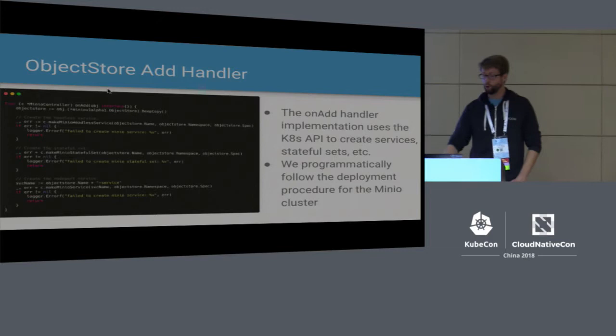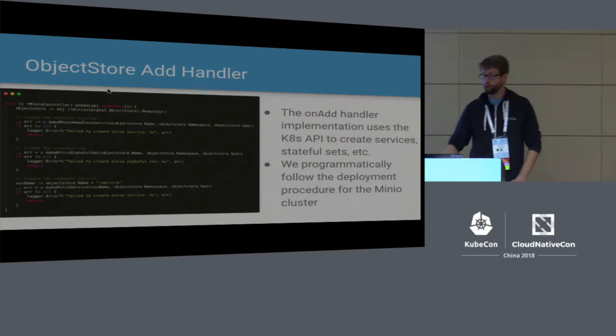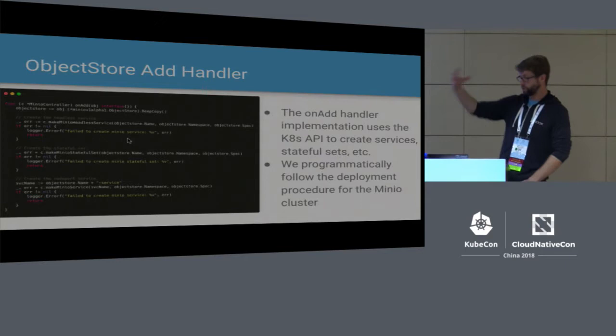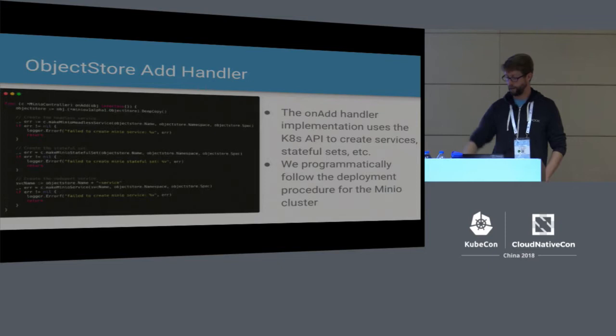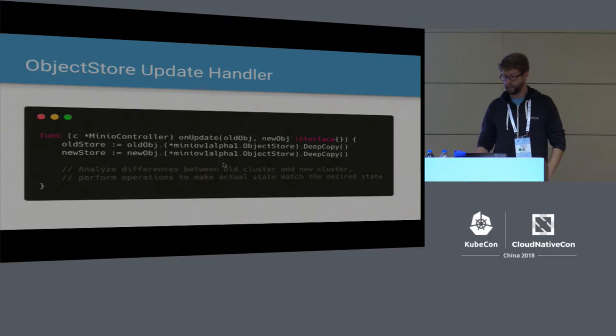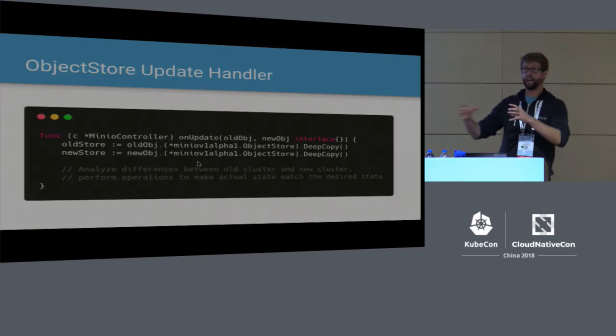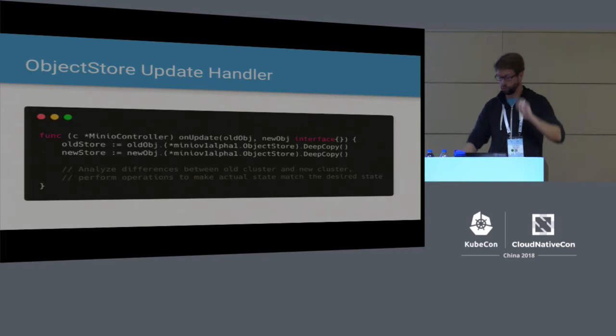The on-add handler is where the real work happens. When a Minio object store gets included into the cluster, it runs functions to make the service for it, make the stateful sets, and create a service on top. This is all programmatic Go code talking to the Kubernetes API cluster to make a Minio object store happen. Similarly for update — you look at the old spec and the new one, analyze the difference, and take corrective actions using the Kubernetes API to make desired state become actual state.